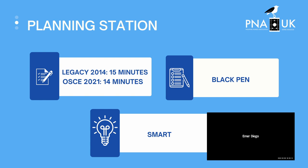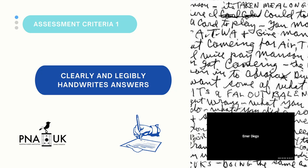The first marking criteria: make sure you write clearly and legibly. Remember, your examiner is the person marking your papers. Make sure your handwriting is at its best on that day, because you cannot explain whatever you've written in your care plan once you've submitted it. If the examiner cannot understand what you've written, it might result in a fail.